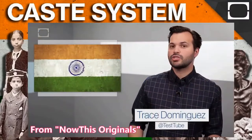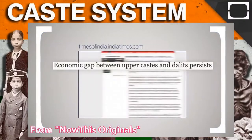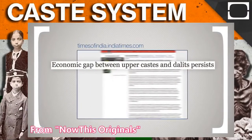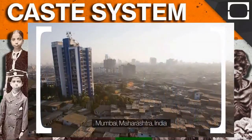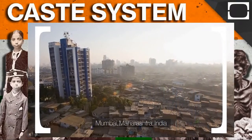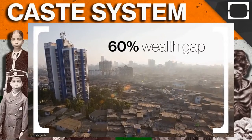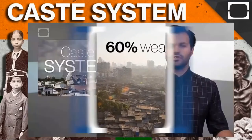India is growing and changing fast, but some traditional views are still in place. Institutions like the caste system have been outlawed, yet caste discrimination and segregation still occurs. The most recent economic data indicated that in urban areas, a wealth gap of 60% exists between people traditionally from the highest and lowest caste. So, what is the Indian caste system, and how is it affecting modern India?